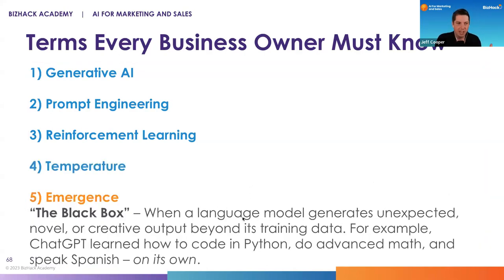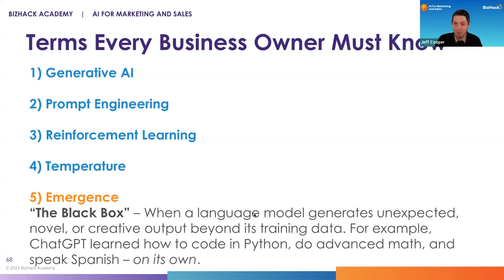It's part of why some of the newer models sound so much more human — they haven't been so robotic in the way they generate text. Emergence — we just talked about this — is the black box. When you train language models with larger and larger sets of data, or add layers to the neural networks, you start to see emerging features you're not explicitly training: the ability to write code, do math, speak in Spanish, answer questions. All of these are things the machine learned on its own without us explicitly training it.